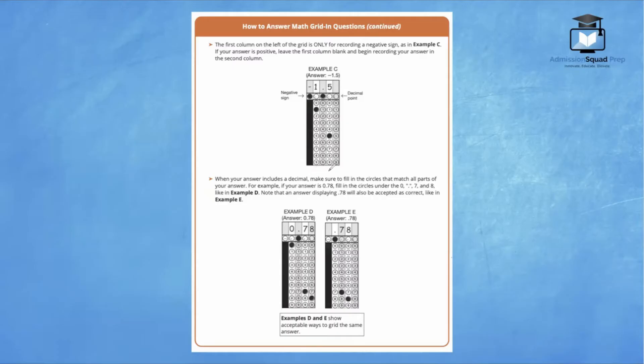When your answer includes a decimal, make sure to fill in the circles that match all parts of your answer. For example, if your answer is 0.78, fill in the circles under 0, the decimal point, the 7, and the 8. We start off with the white box right here, and we write the 0, the decimal point, the 7, and the 8, and then we're going to have four bubbles filled in.